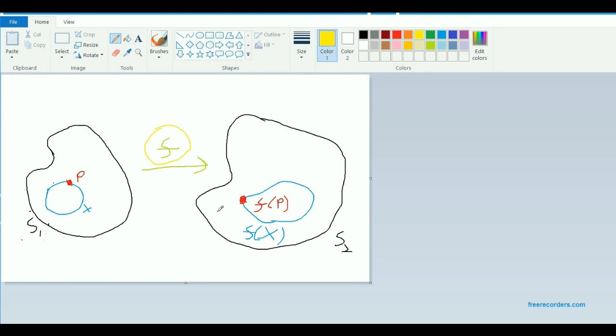So in other words, we require that if P is a limit point of a subset of S1, then F of P is a limit point of the subset F of X. And this is the necessary and sufficient condition for continuity, for a mapping from the Fréchet space S1 to the Fréchet space S2 to be continuous.